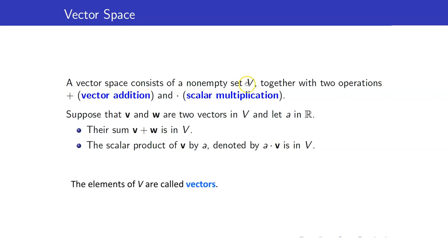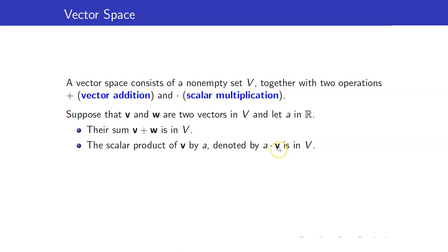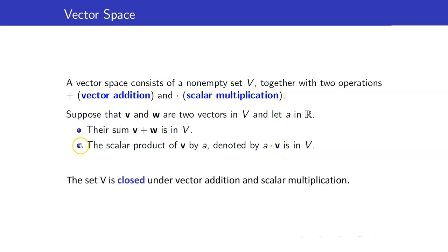The elements of V are called vectors. These two operations must satisfy the following properties. First, if you get the sum of two vectors, the answer should still be a vector in V. Next, if you have a scalar and you multiply it with a vector V, the answer should still be in V. We say that the set is closed under vector addition and scalar multiplication.